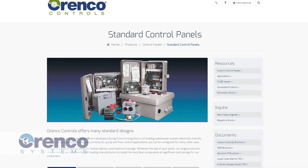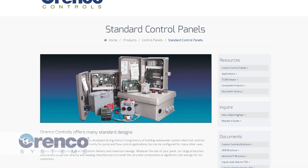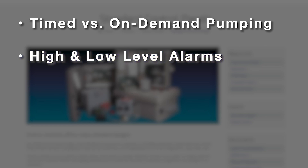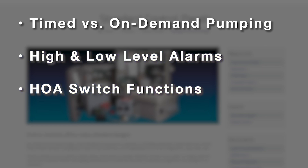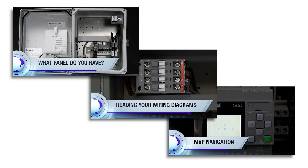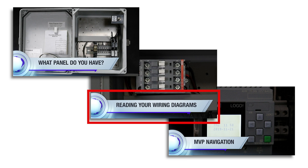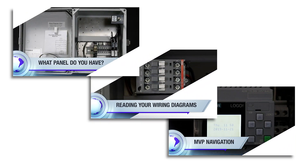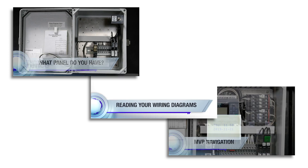In this video we will cover some of the basic operations of the Orenco control panels. Topics will include differences in timed versus on-demand pumping operations, identifying high and low level alarms, and the functions of an HOA switch. Before proceeding, please be sure to watch our videos on panel identification, reading your wiring diagrams, and MVP navigation as they will provide additional information not covered in this video.